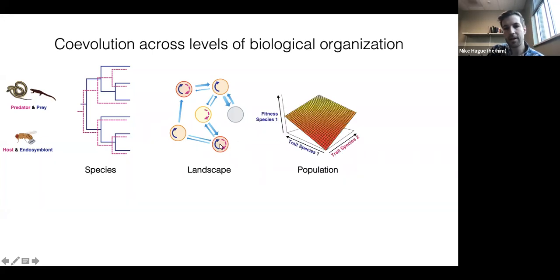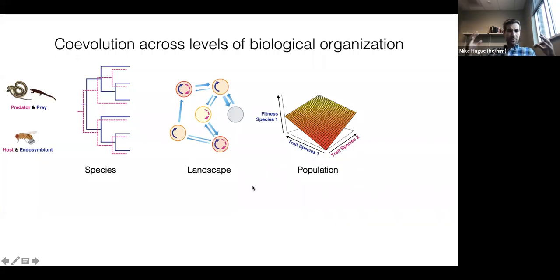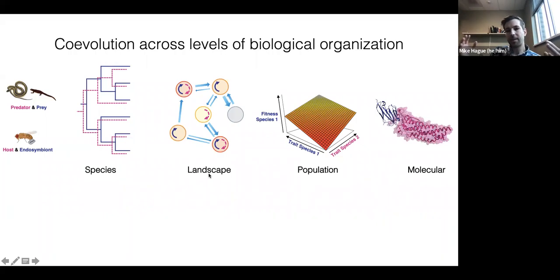Zooming in even further to the level of an individual population: what are the actual traits in predator and prey or host and endosymbiont that mediate the outcome of interactions between those two species? Specifically, you get co-evolutionary dynamics when the fitness of one organism depends not only on its own trait value, but also the combination of that trait with its co-evolving partner. And then finally, what's the cellular and genetic basis of those traits? If you zoom all the way down to the level of cells and proteins, what are the physical interactions between these two co-evolving species that mediate the outcome at the population level?